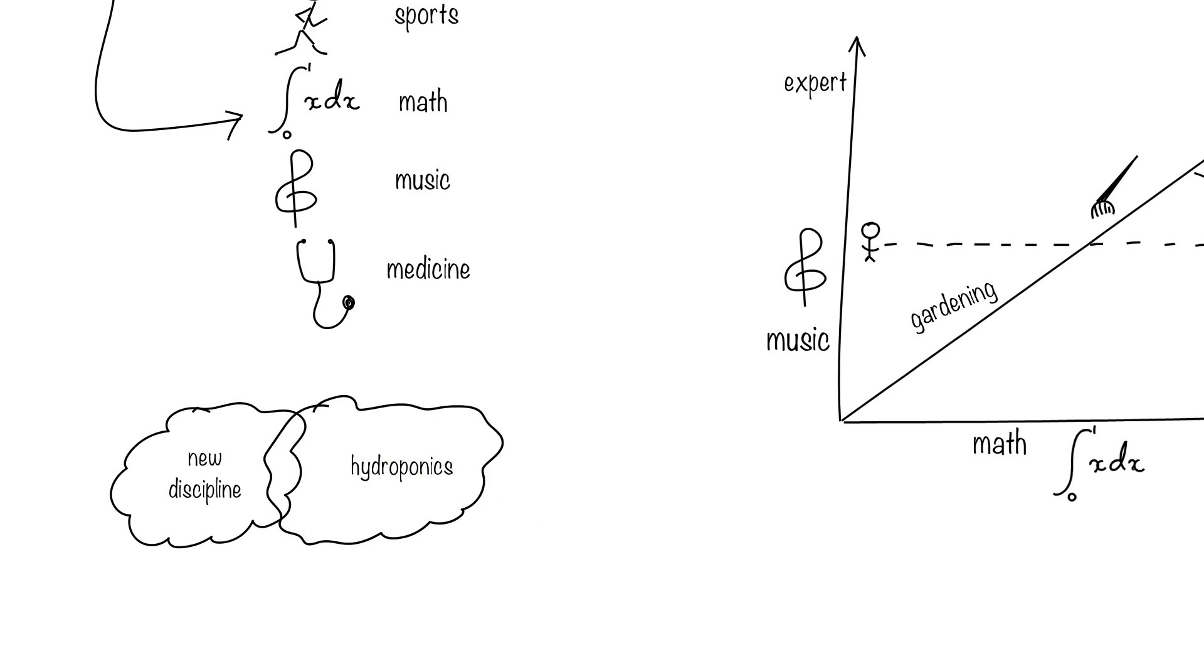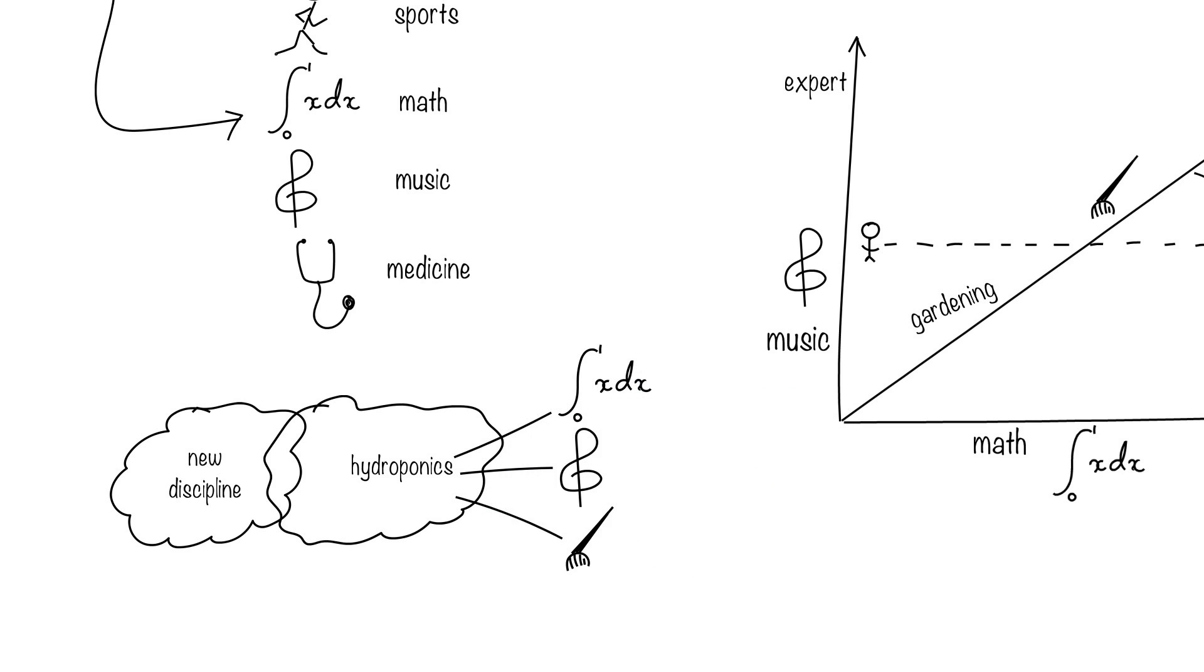So let's see where Ishwar can work. Perhaps he'll work in an entirely new field that has not been invented yet, or he'll work in the field of hydroponics, which is the science of growing plants without soil. He can use his love for gardening, use his math skills for optimizing the processes, and his interest in music to explore if plants grow healthier in a musical environment.